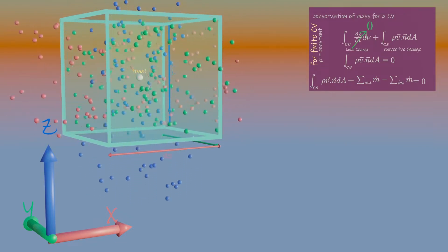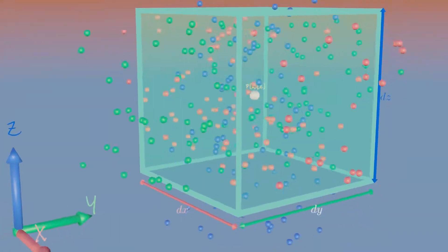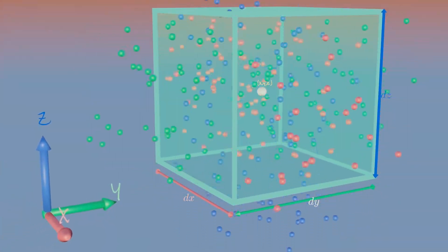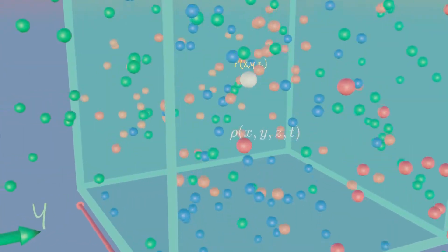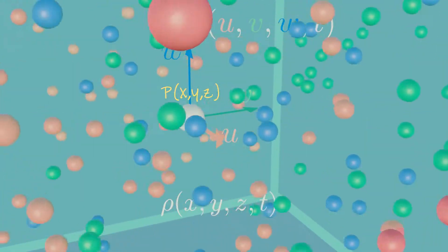The center of the box is shown at some arbitrary point P from the origin. At the center of the box, we define the density as rho, and the velocity components as u, v and w in x, y and z direction.